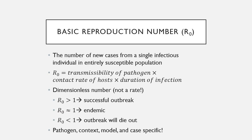This brings us to an important quantity that you may have heard of called the basic reproduction number, or R0. This represents the number of new cases that come from a single infectious individual in an entirely susceptible population. It is a quantity representing the multiplication of three things: the transmissibility of the pathogen, the contact rate of the hosts, and the duration of the infection. It's important to note that this is a dimensionless number — it's not a rate. Dimensionless numbers help us understand general properties of a physical system relevant regardless of scale, and in our case this number gives us an idea of what the outbreak is going to do.